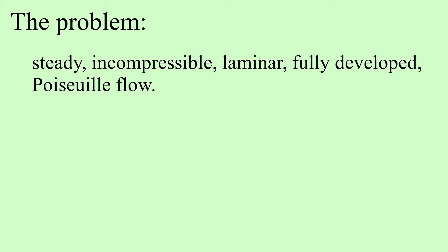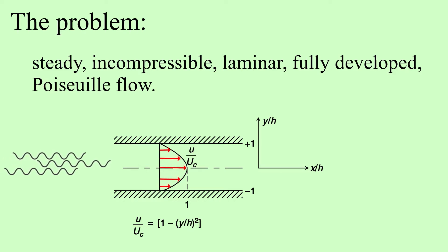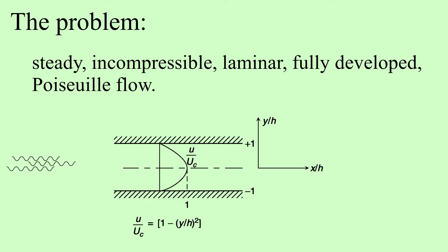Let's specify the problem completely. We have a steady incompressible laminar fully developed Poiseuille flow, which means there is a plane channel flow between two parallel plates, and we are going to perturb this flow with small amplitude disturbances in the form of traveling waves. Are these waves going to attenuate and die out, or are they going to amplify and make the flow turbulent?